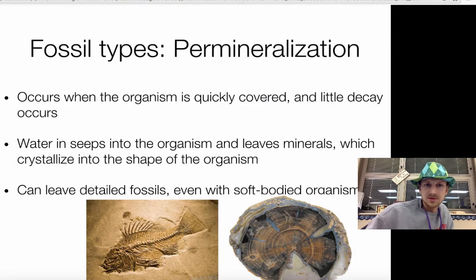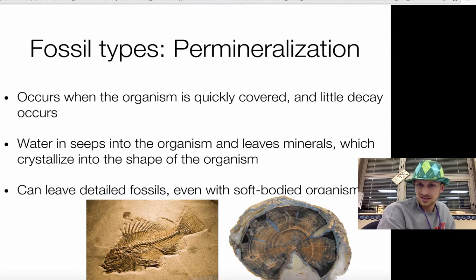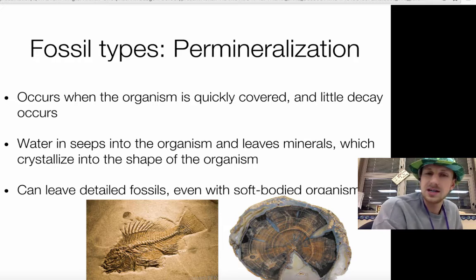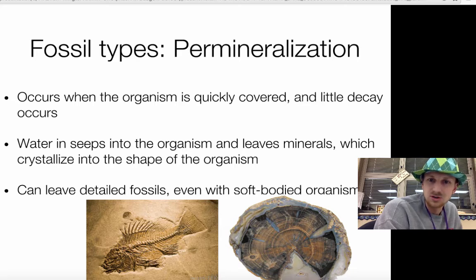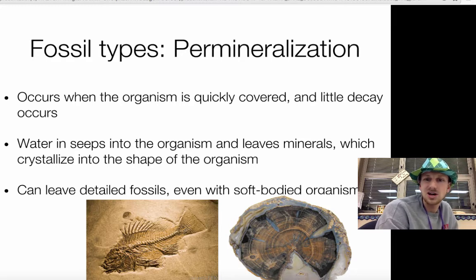The next type is permineralization, and these are a bit less common. What happens is if something gets completely covered really quickly and very little decay occurs, a lot of the organism gets preserved. Water can seep into its body parts — even into its cells — and deposits minerals that take on the shape of everything inside the cell. You can actually find fossils that have their cells preserved and see the shape of those cells. These are very detailed and can even happen with soft-bodied things like jellyfish, so they're pretty cool.